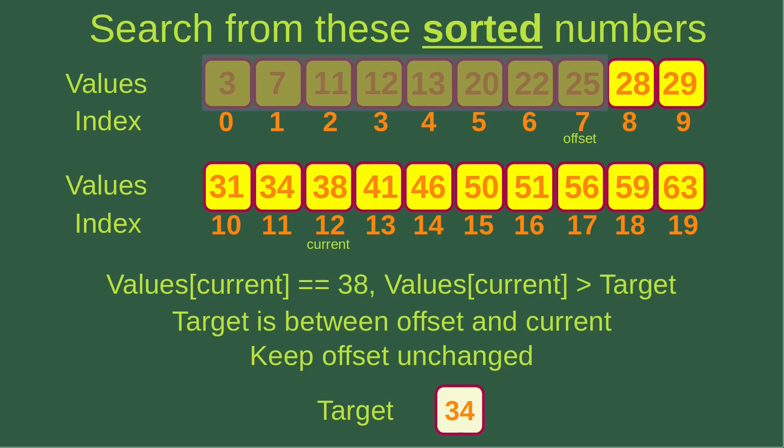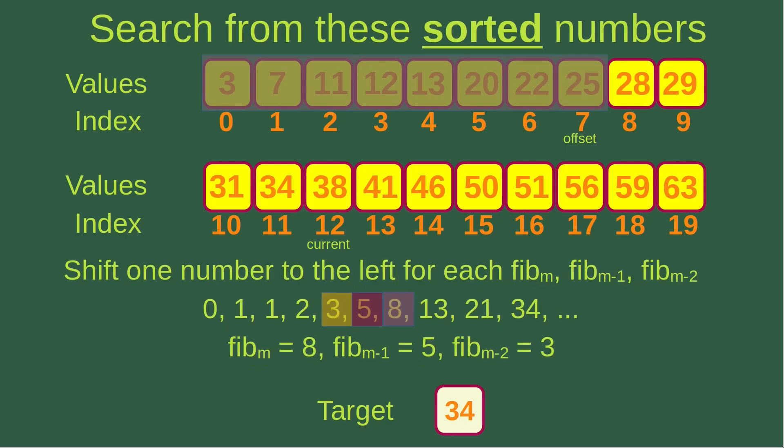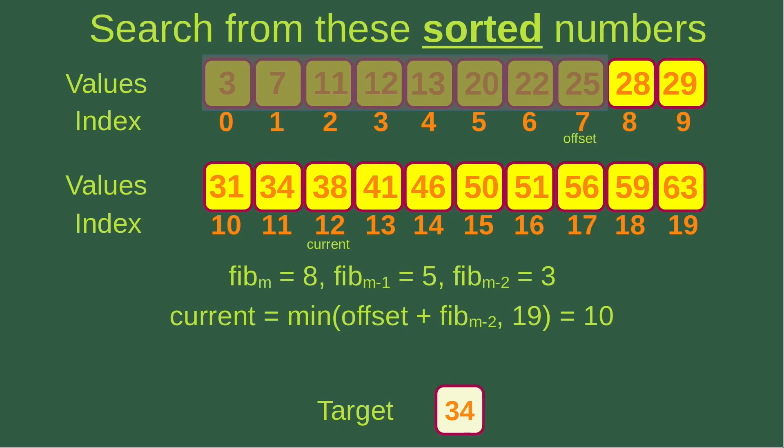I repeat the process of finding Fibonacci numbers by shifting one number to the left. Now Fibonacci M is 8, Fibonacci M-1 is 5, and Fibonacci M-2 is 3. Offset is 7 and Fibonacci M-2 is 3, so 7 plus 3 is 10. Comparing 10 and 19 gives the smaller value 10, so the current index becomes 10. The value at index 10 is 31, which is smaller than the target 34.